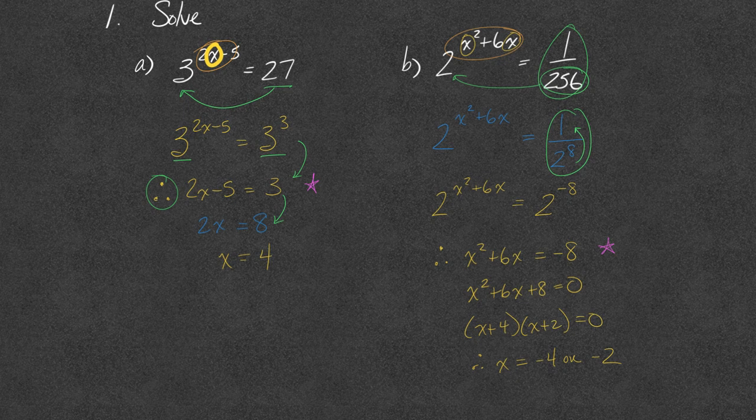I'm hoping this is coming back to you relatively quickly. First question we always ask: where's the variable? If it's up in the exponent, we've got to get it out — that means we need a power equal to a power with the same base. Let's jump in and move a little quicker through some other examples.